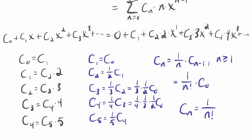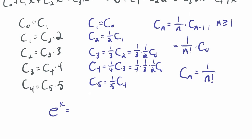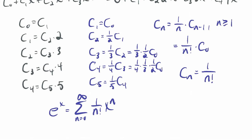So e to the x equals the series n goes from 0 to infinity of 1 over n factorial times x to the n. Remember, 0 factorial is 1, so that's fine. This is called the McLaurin series for e to the x — basically a power series representation for e to the x.